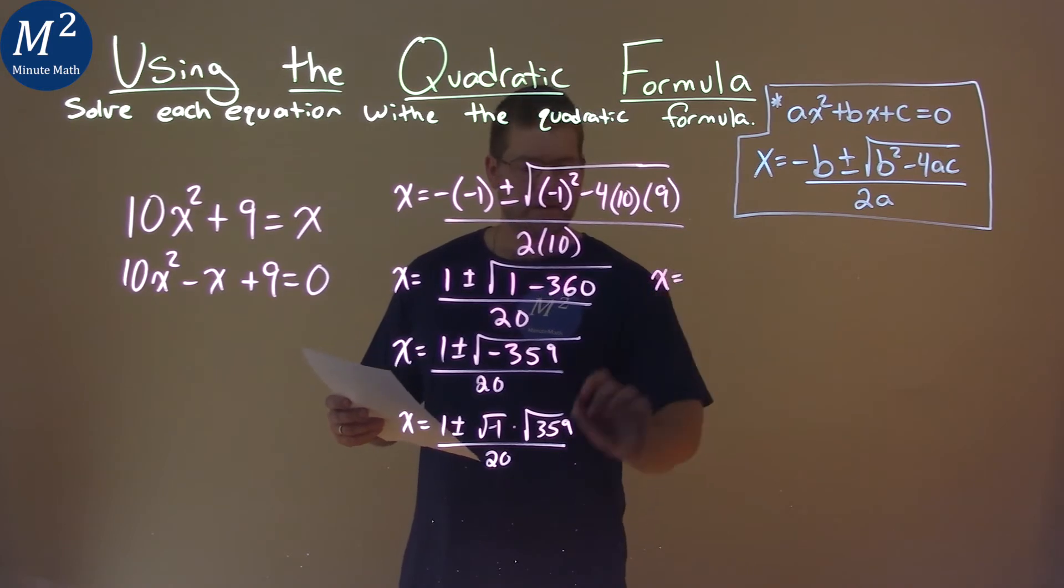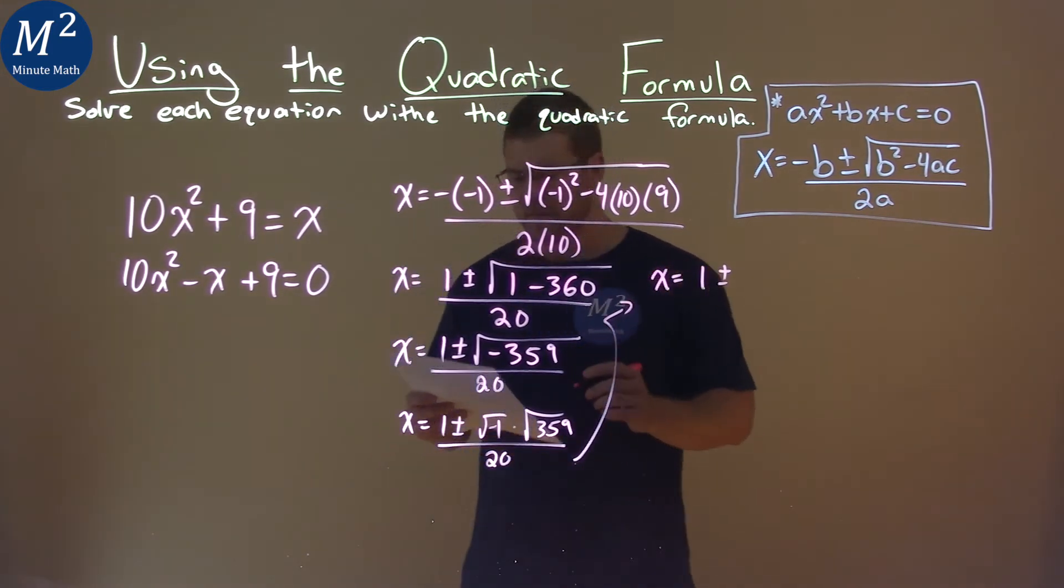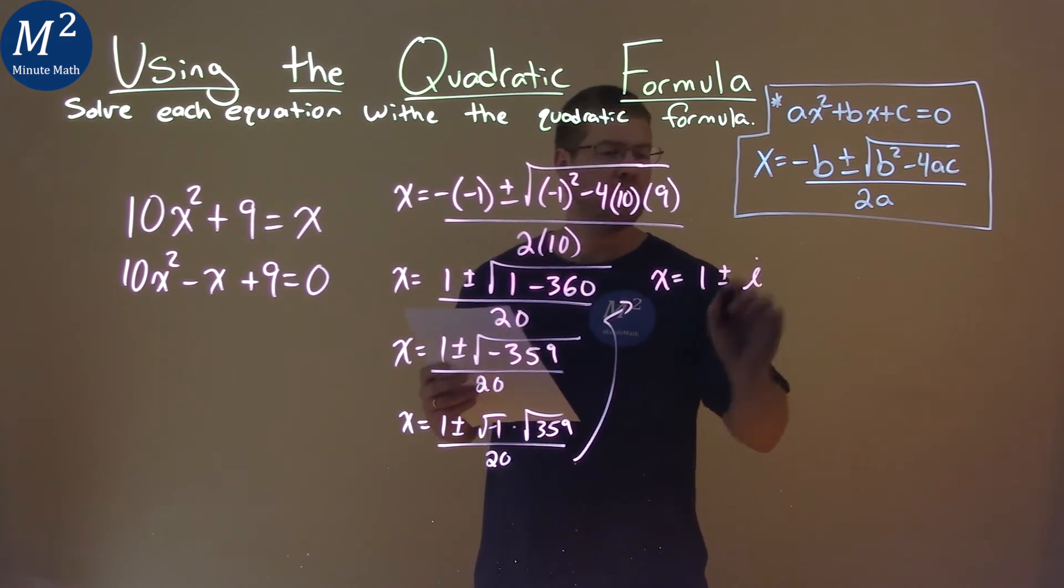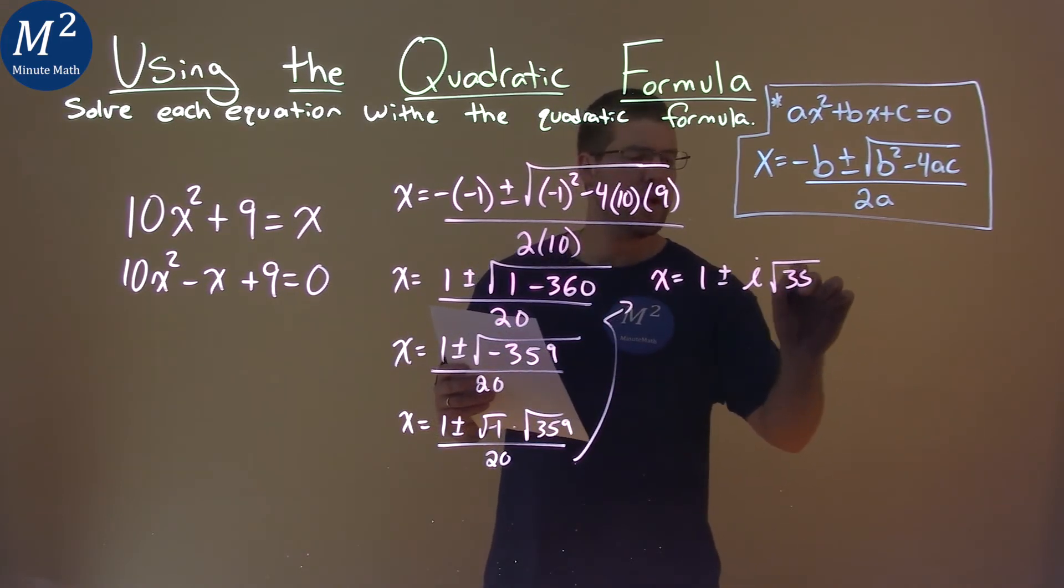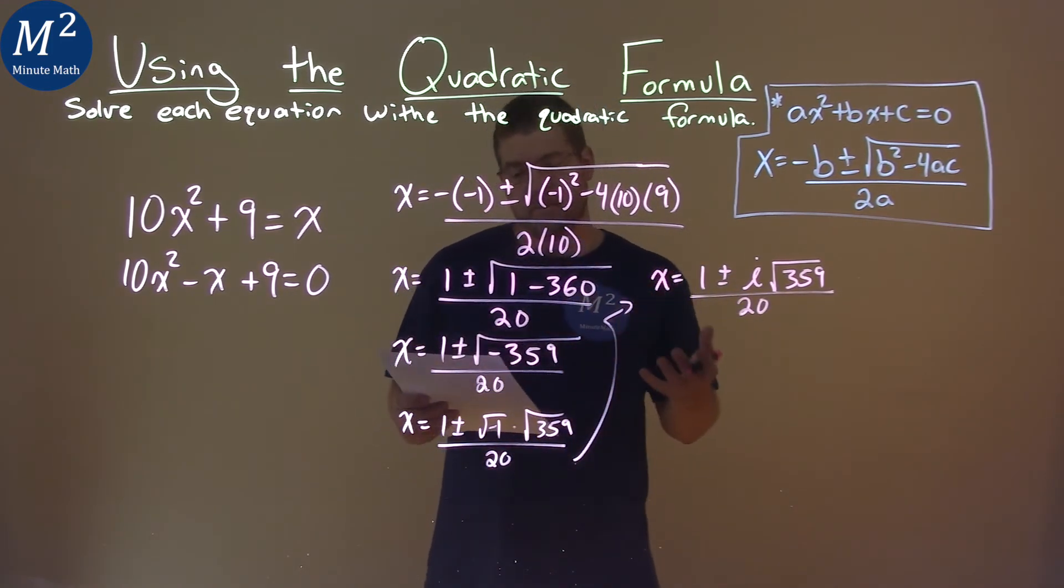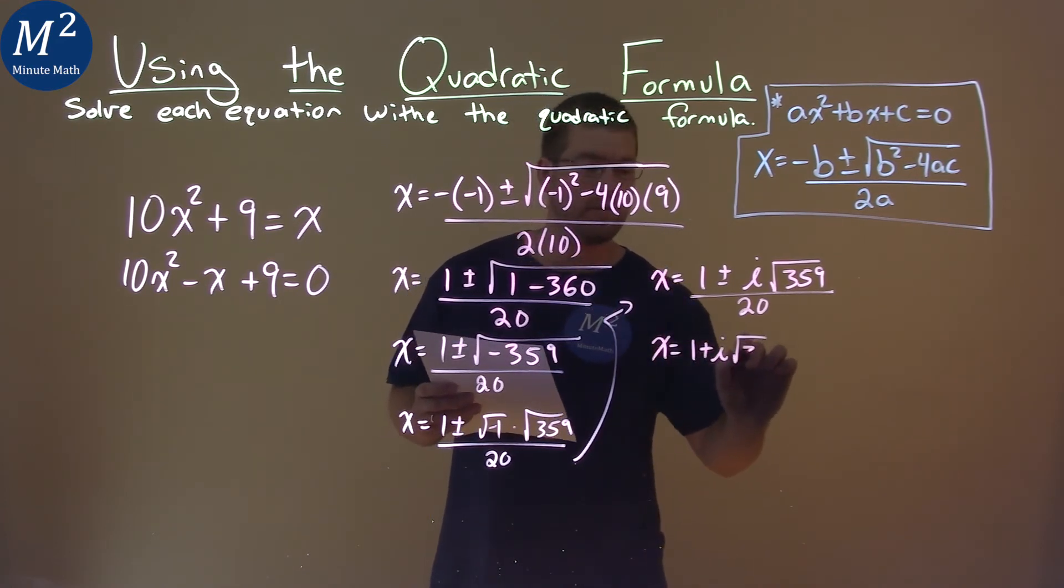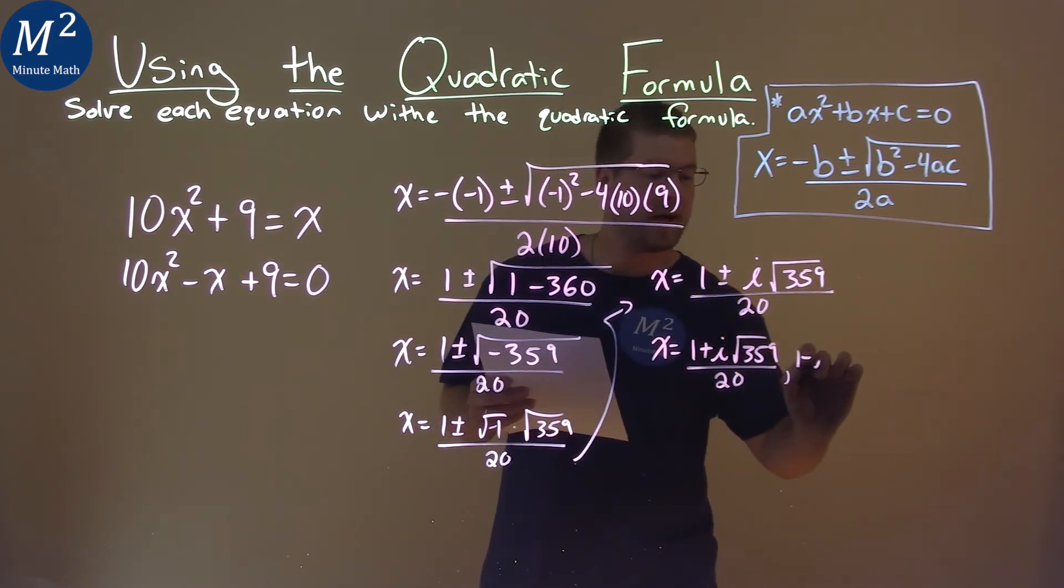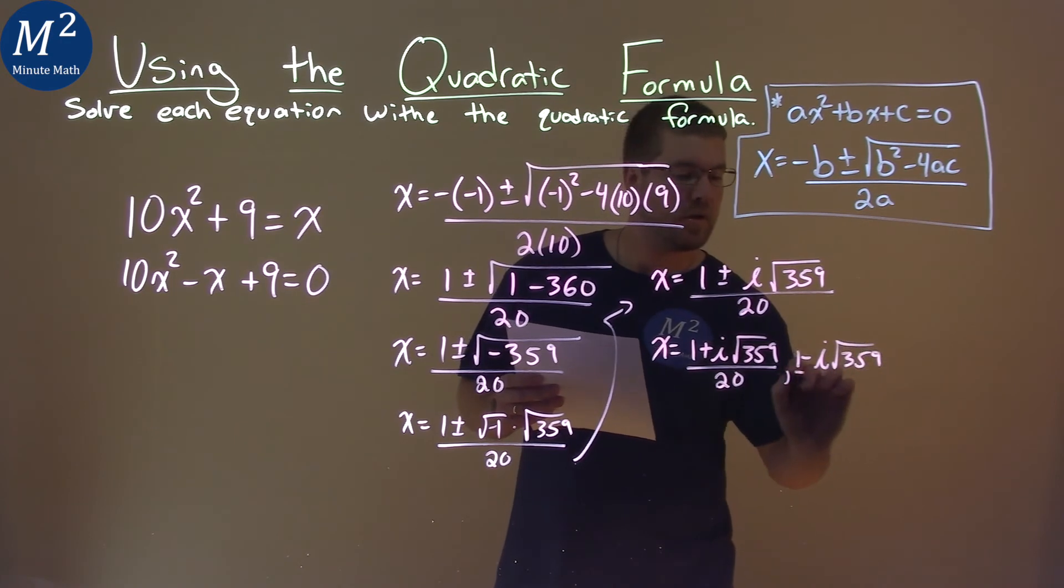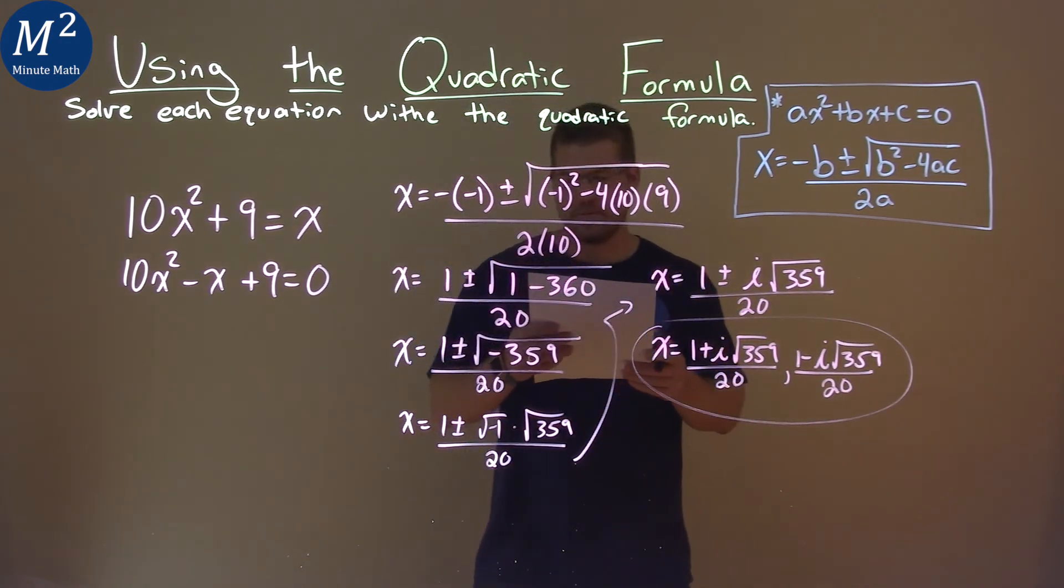We can rewrite it here as x equals 1 plus or minus, and instead of square root of negative 1, we know that's equal to i. Then we have the square root of 359 over 20. Well, we can now write this as two separate statements, the plus and the minus, so x equals 1 plus i square root of 359 over 20, and 1 minus i square root of 359 over 20, and that is our final answer.